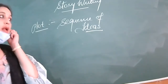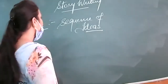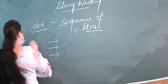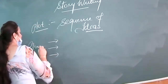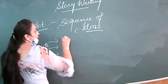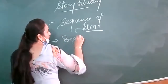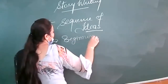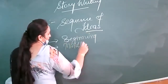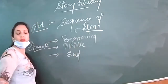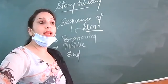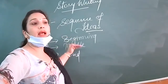When you are going to write a story, there are three elements you have to keep in mind: beginning, middle, and end. Your story writing should have these three elements.